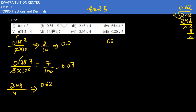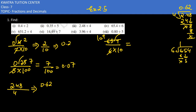Next we have 65.4 divided by 6. Remove the decimal, 10 comes in the denominator. Now check if 654 is divisible by 6 — yes it is. When you divide 654 by 6, you get 109. Let me show: 654 divided by 6, 1 comes, 6 cancels. 54 comes down, place 0, 6 times 9 is 54. So value is 109 divided by 10, which gives 10.9 as the answer.